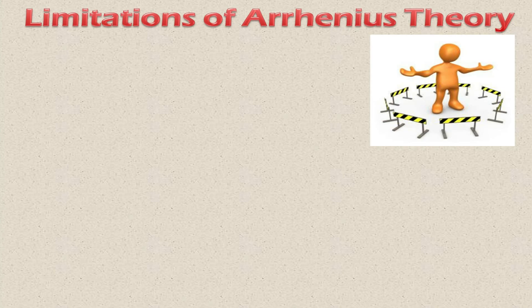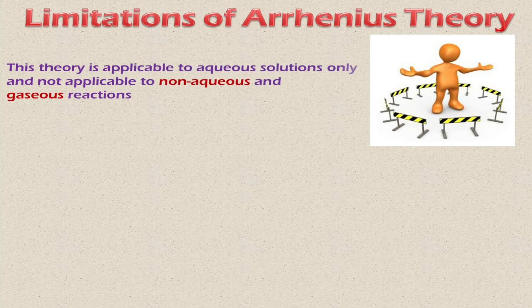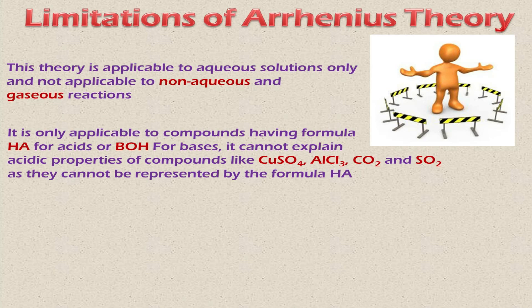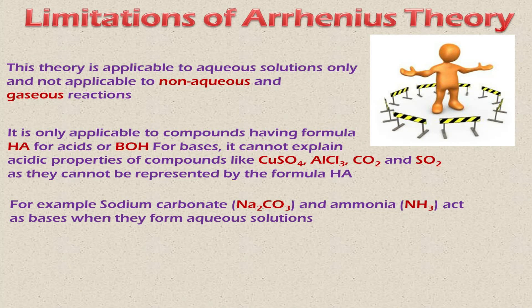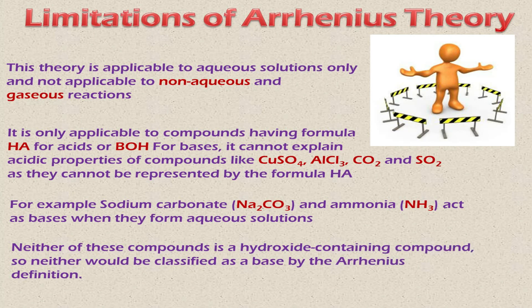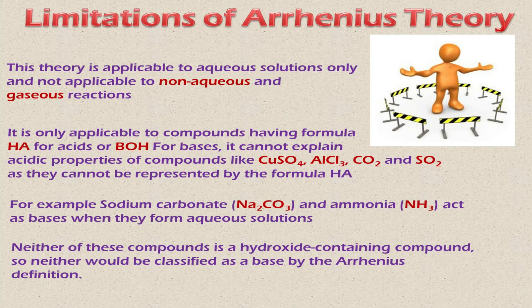Now let's discuss some limitations of Arrhenius theory. This theory is applicable to aqueous solutions only and not applicable to non-aqueous and gaseous reactions. If a substance is not soluble in water, you cannot recognize it as an acid or base. It is only applicable to compounds having the formula HA for acids and BOH for bases. It cannot explain the acidic properties of compounds like copper sulfate, aluminium chloride, carbon dioxide, or sulfur dioxide, as they cannot be represented by the formula HA. For example, sodium carbonate Na₂CO₃ and ammonia NH₃ act as bases in aqueous solution, but neither contains an OH⁻ group, so neither would be classified as a base by the Arrhenius definition.